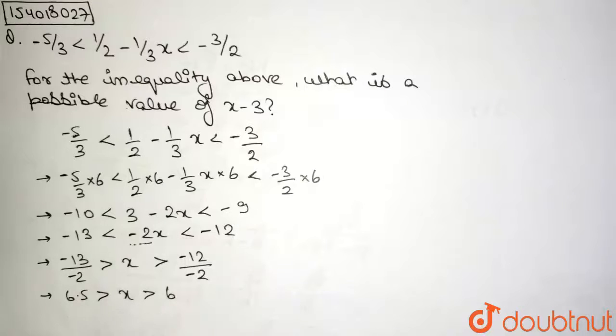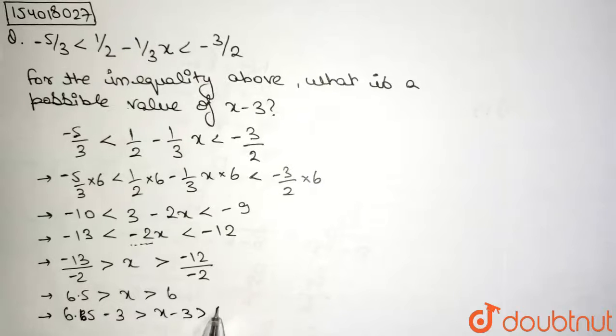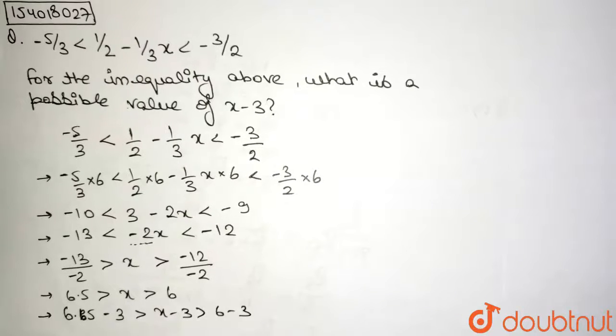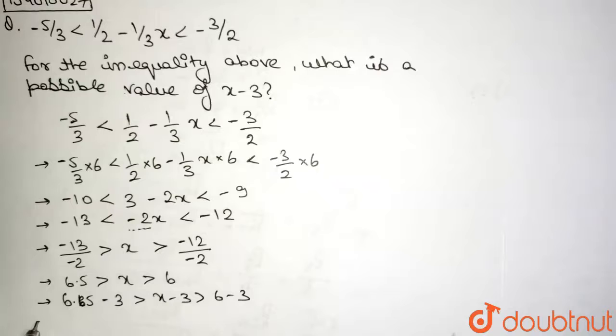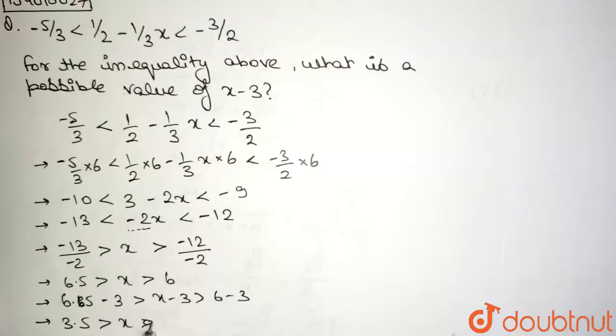Now to obtain the range for x minus 3, what do we do? We simply subtract by 3. So subtracting everything by 3, what do I obtain? 6.5 minus 3 is greater than x minus 3 is greater than 6 minus 3, right? So what is the final step? 3.5 is greater than x minus 3, which is greater than 3. So x minus 3 lies in the range of 3 to 3.5, right?